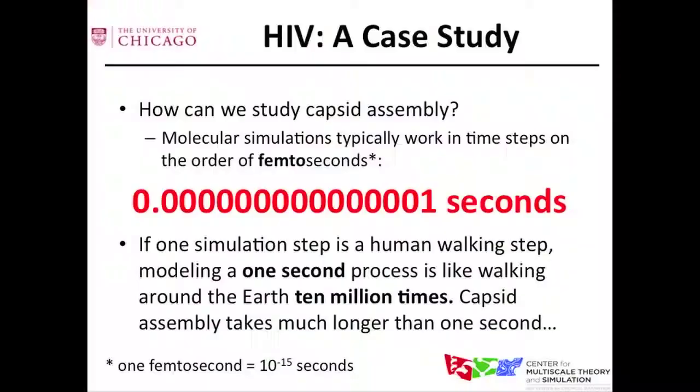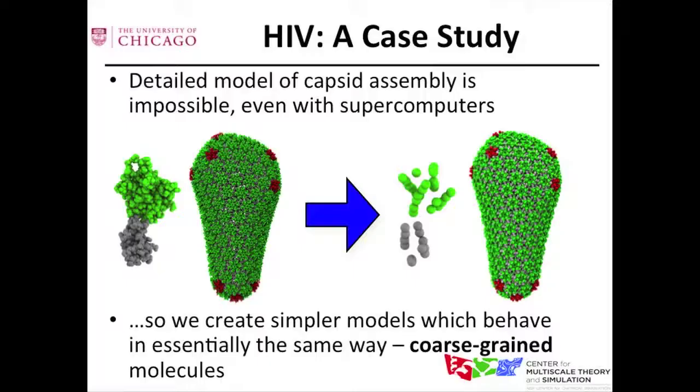The problem is that a typical molecular simulation gives you femtosecond-scale dynamics — 10⁻¹⁵ seconds — but the timescale of the virus is on the order of at least a second. We're off by many orders of magnitude. That's where these coarse-grain models come in. The coarse-grain models fold much of the irrelevant timescales into the model — it's a far more sophisticated form of molecular modeling than just building a simple atomic model. We were able to do a coarse-grain model of all of these proteins and develop a model of the capsid.